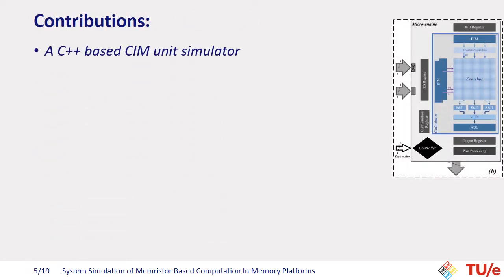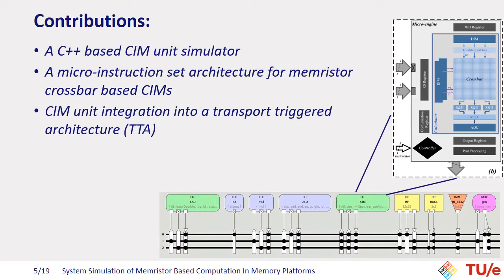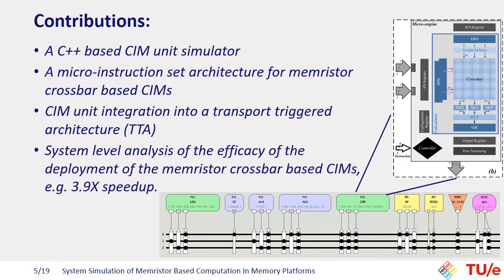To do so, we designed the computation in memory unit simulator. In addition, we developed a micro-instruction architecture for Memristor crossbar-based SIMs. Then, we integrated our new unit into a transport-trigger architecture. Lastly, we used our framework to analyze the efficacy of the deployment of the Memristor crossbar-based SIMs, and we observed an almost 4x speedup over the baseline TTA without any SIMs.